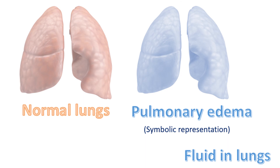The lung capillaries line the tiny air spaces of the lungs known as alveoli, where carbon dioxide is removed from the blood and oxygen is taken up. When pressure in the lung capillaries rises, fluid from the blood moves out of the capillaries into the alveoli. When the alveoli are flooded with fluid, they are unable to exchange oxygen for carbon dioxide and the person becomes breathless. This situation is known as pulmonary edema. The oxygen saturation in blood falls and this can be very serious.